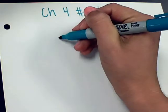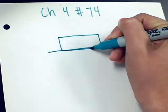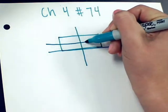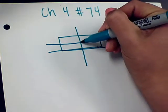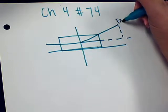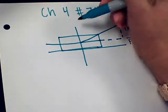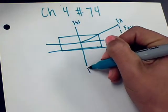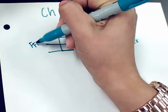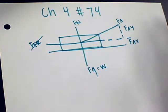The subject of our problem is an airplane, so we're going to start off by drawing our free body diagram. We have F_A, F_AY, and F_AX. Also, our normal force, our force of gravity which is equal to our weight, and our force of friction, which we are actually canceling out because we're assuming that there's no friction while the plane is in the air.